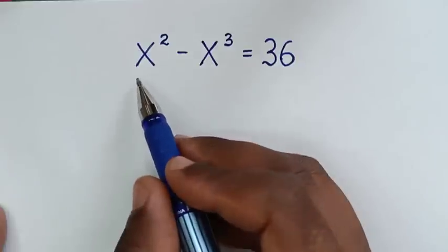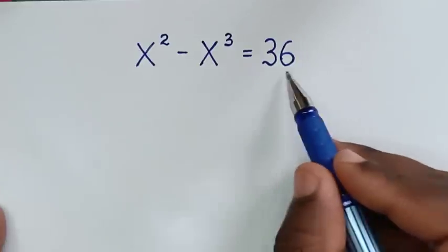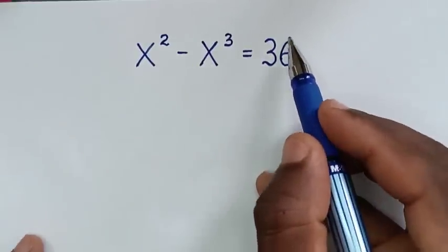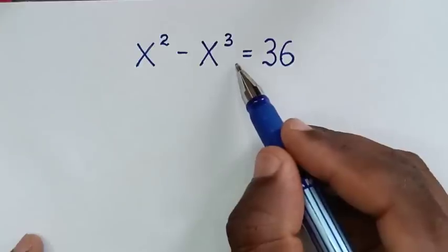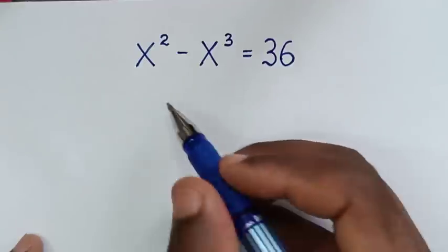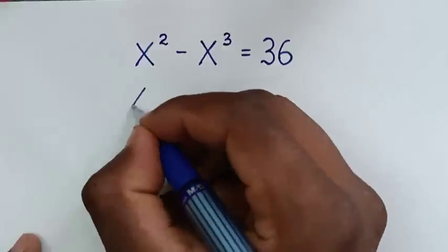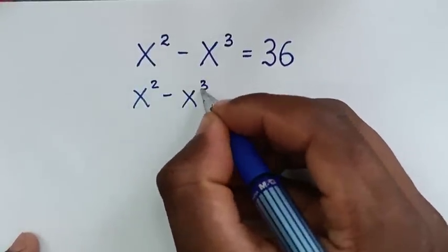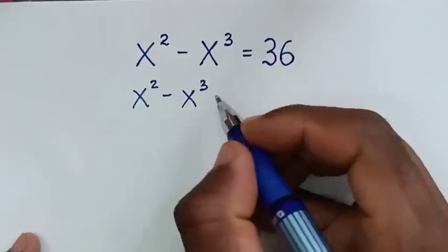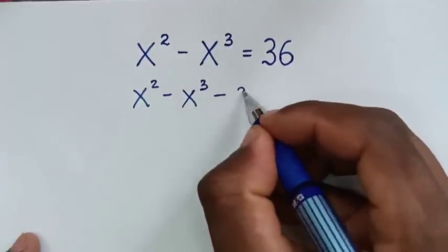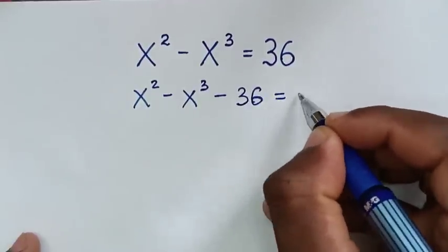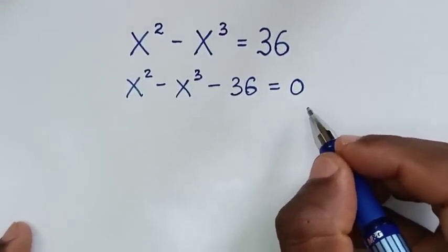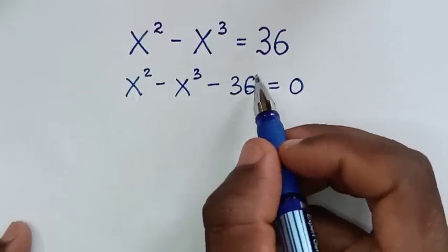To find the values of x from this equation. In the first step we will take this 36 to the left side, so it will be x squared minus x cubed minus 36 is equal to 0.